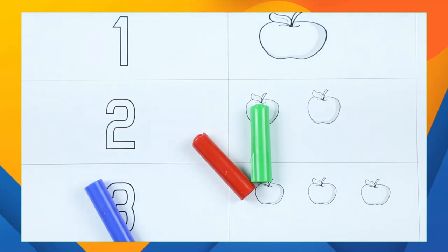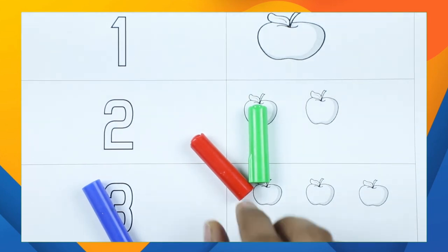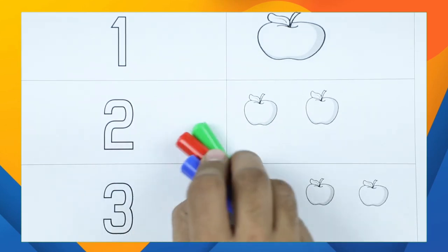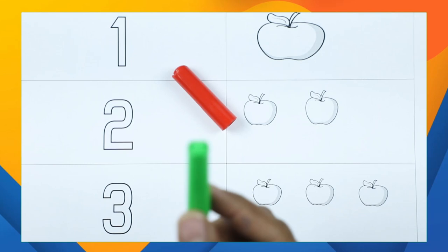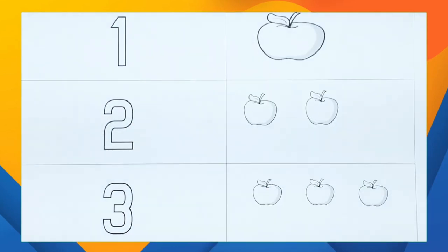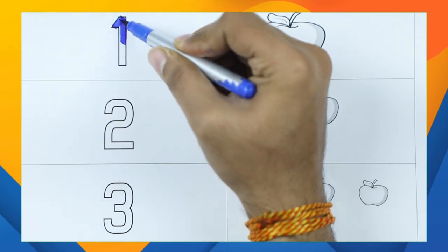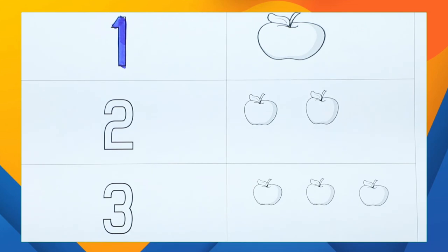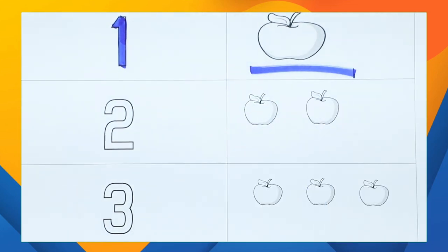Hello kids! Today we learn 1, 2, 3 with apples — one apple, two apples, three apples — with colors red, green, and blue. Number one with blue color: how many apples here? Yes, one apple!